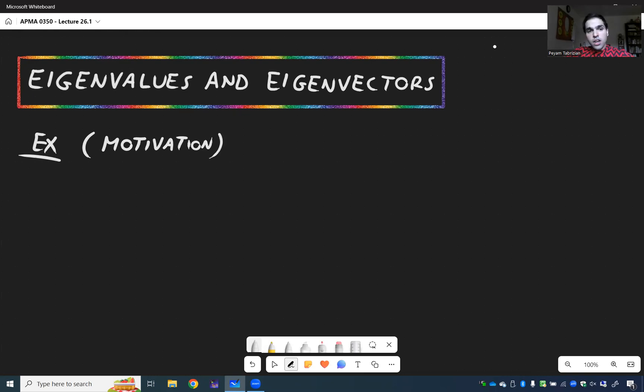And let me motivate this a little bit. For this, consider the matrix A, which is 1, 6, 5, 2, and the vector V, which is 1, 1.